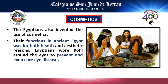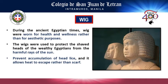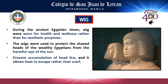Egyptians also invented cosmetics, but the purpose was not only aesthetic — it also served health purposes. They believed that wearing kohl around the eyes could cure and prevent eye disease. Egyptian wigs were also developed for health reasons: they were worn to protect the scalp from the sun's harmful rays, since well-off Egyptians shaved their heads, to prevent head lice, and to allow heat to escape freely rather than trapping it under a scarf.